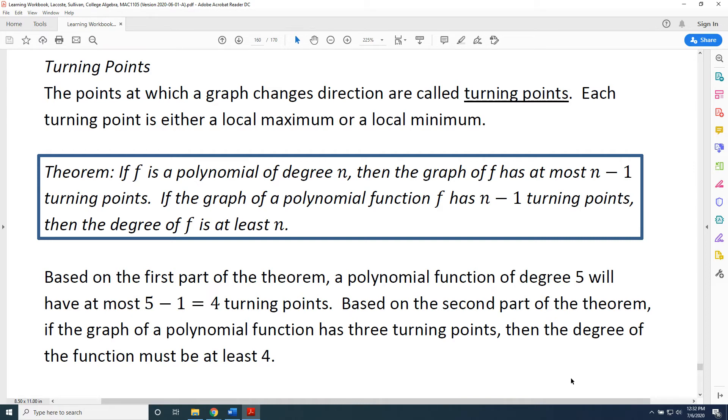There is a relationship between turning points and the degree of a polynomial. Let's learn this theorem. If f is a polynomial of degree n, then the graph of f has at most n minus 1 turning points. If the graph of a polynomial function f has n minus 1 turning points, then the degree of f is at least n.